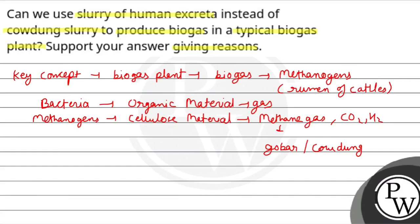Let's move on to the biogas plant. How does a biogas plant work? What is a biogas plant? It is a concrete tank that is about 10 to 15 meters deep.